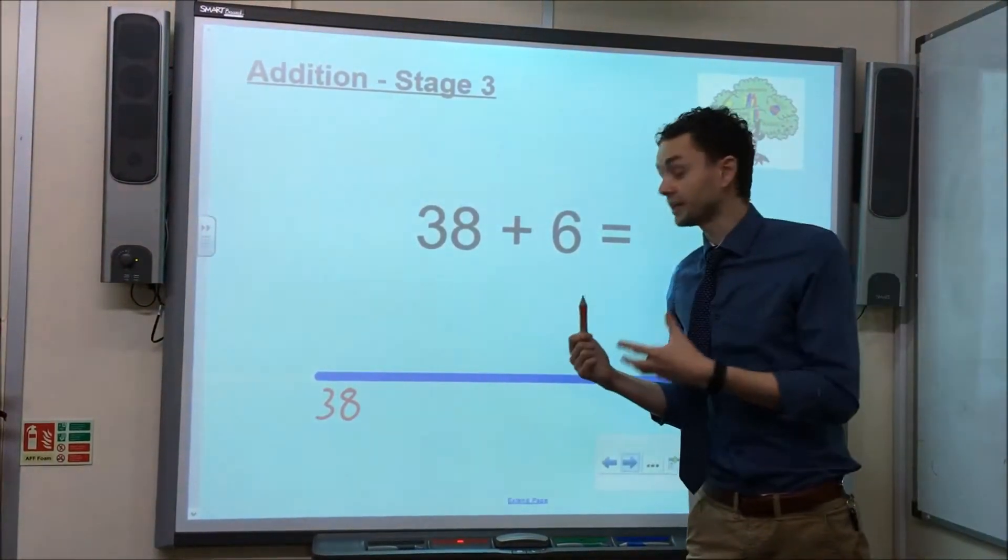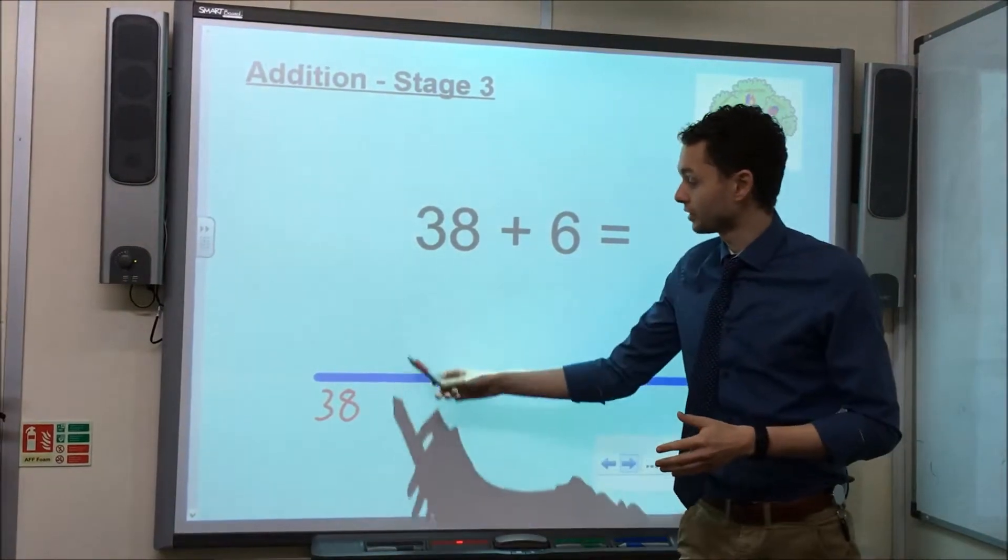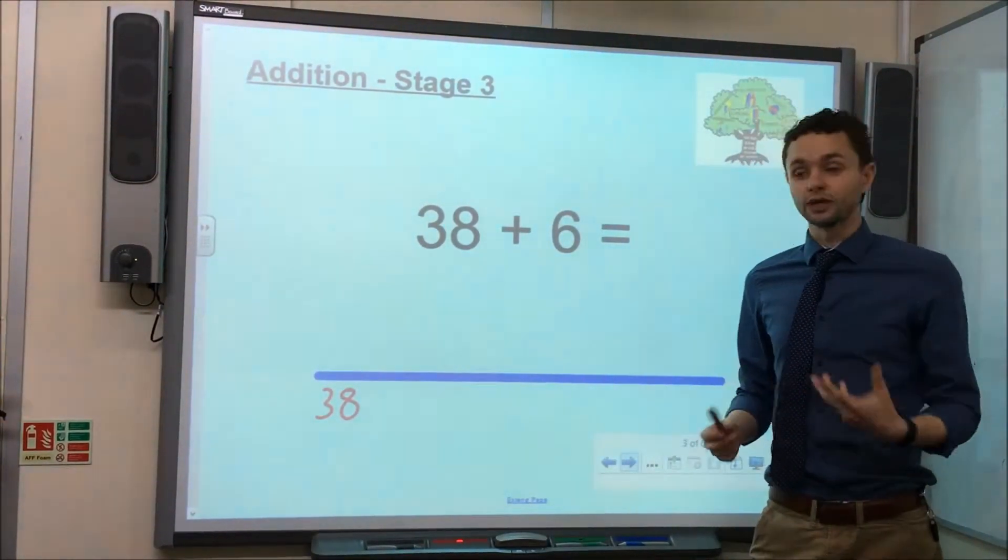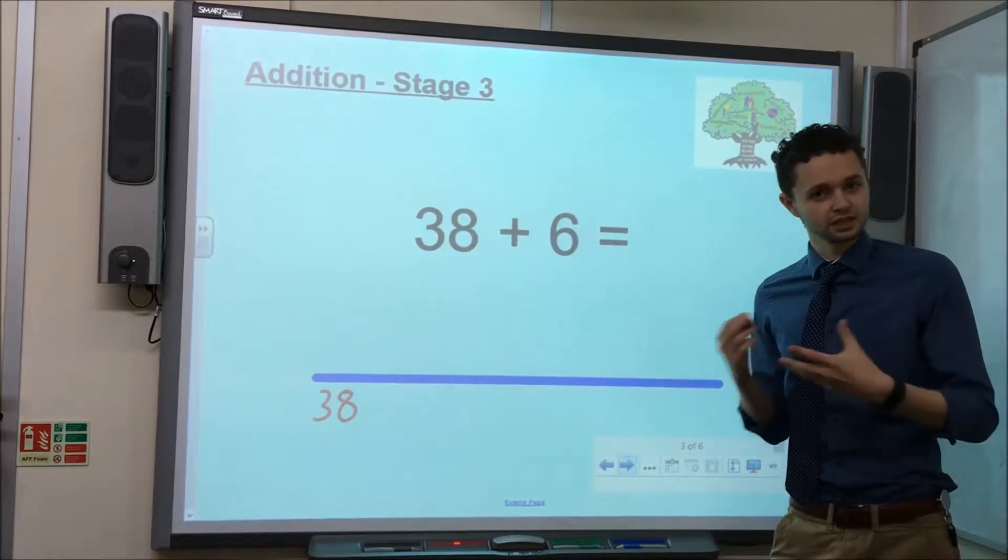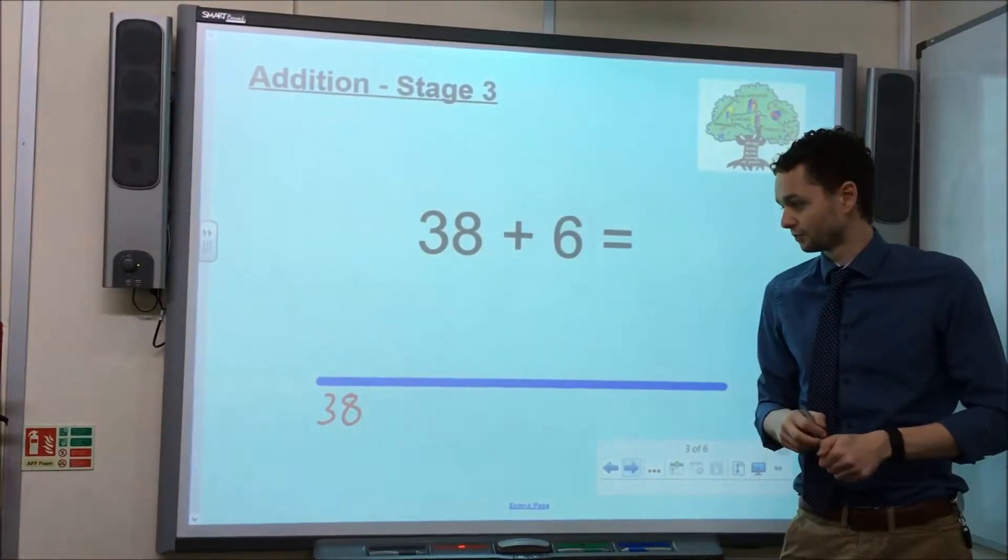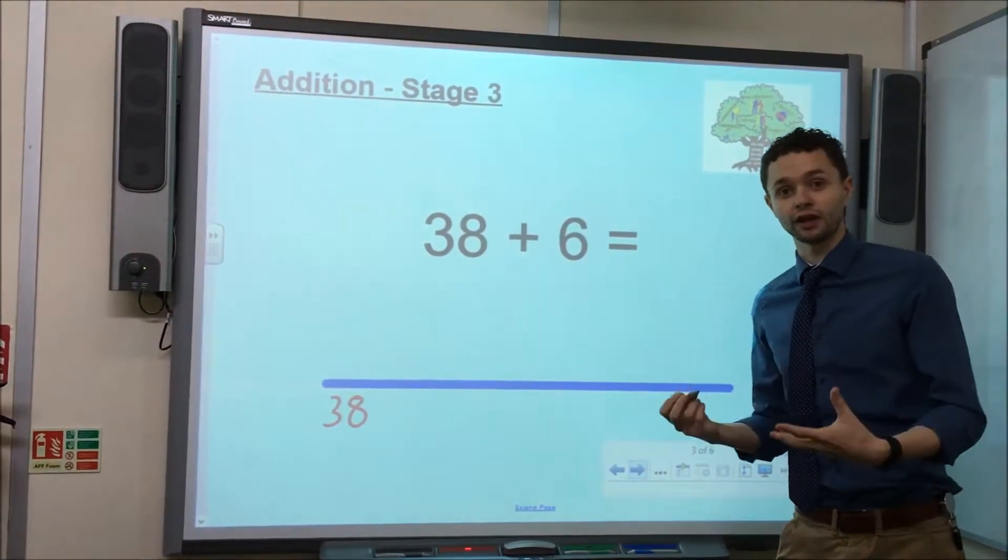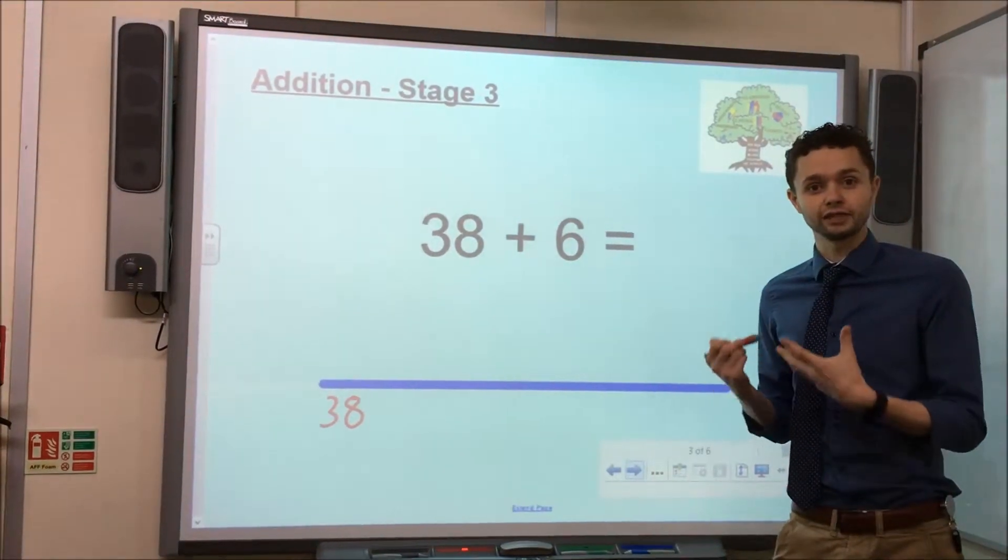Now, rather than taking steps of 1, for instance 39, 40 and so on, we encourage the children to take jumps with this method to save time in solving the calculation. And the first jump we always recommend the children take is to the nearest 10.